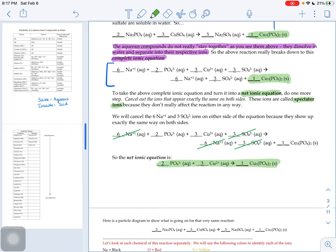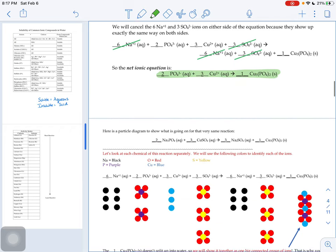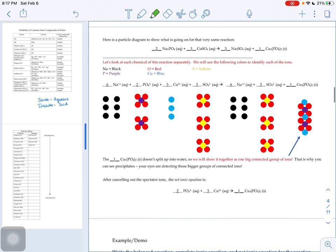I wanted to show you this very same reaction with a particle diagram to show you what's going on. So here's that reaction one more time. Once written out as a balanced chemical equation with all the states of matter. And then here was our complete ionic equation that we figured out.